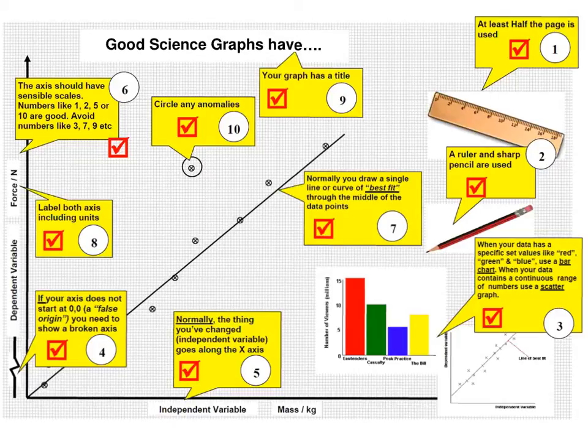Number three, when your data has a specific set of values like red, green and blue, you'd use a bar chart. Notice in this bar chart we have gaps between the bars. That is correctly how you do it. Often students draw bars together and that is wrong.